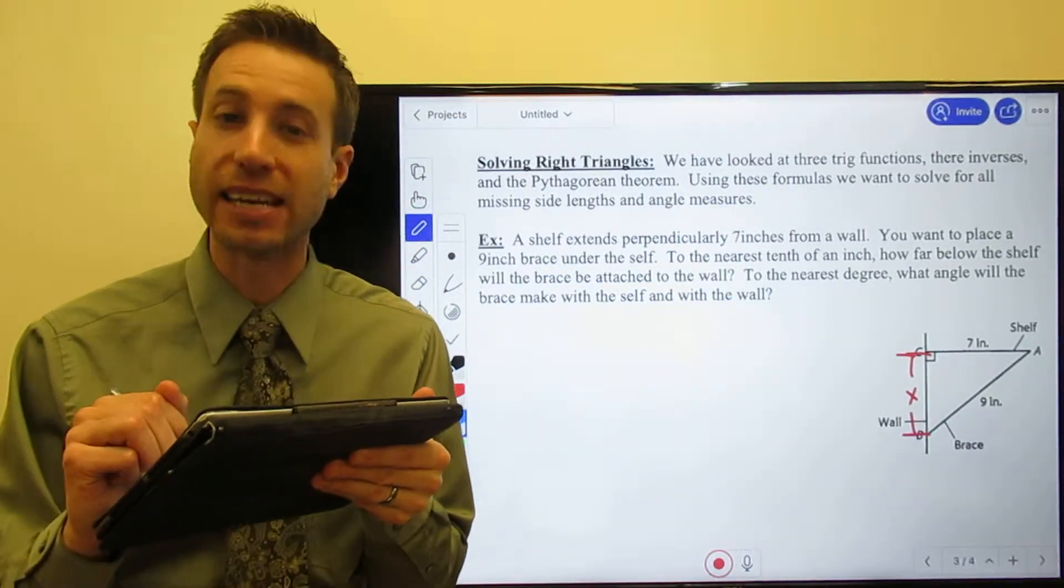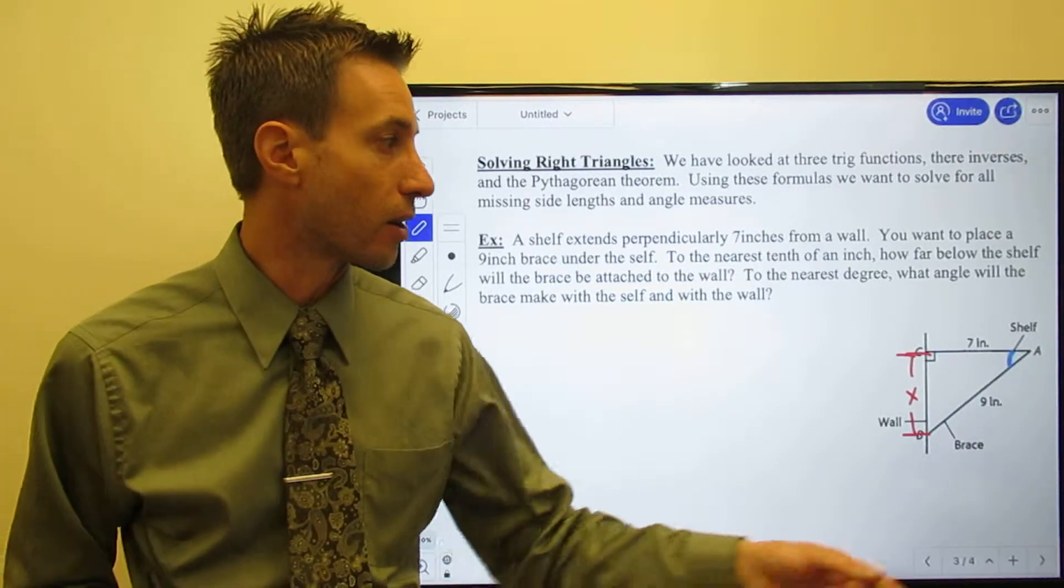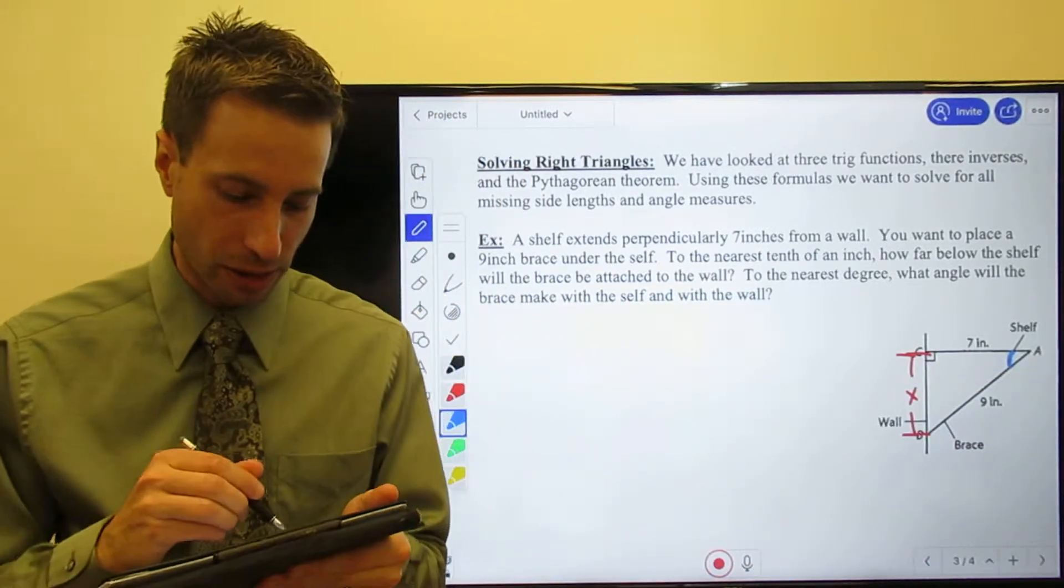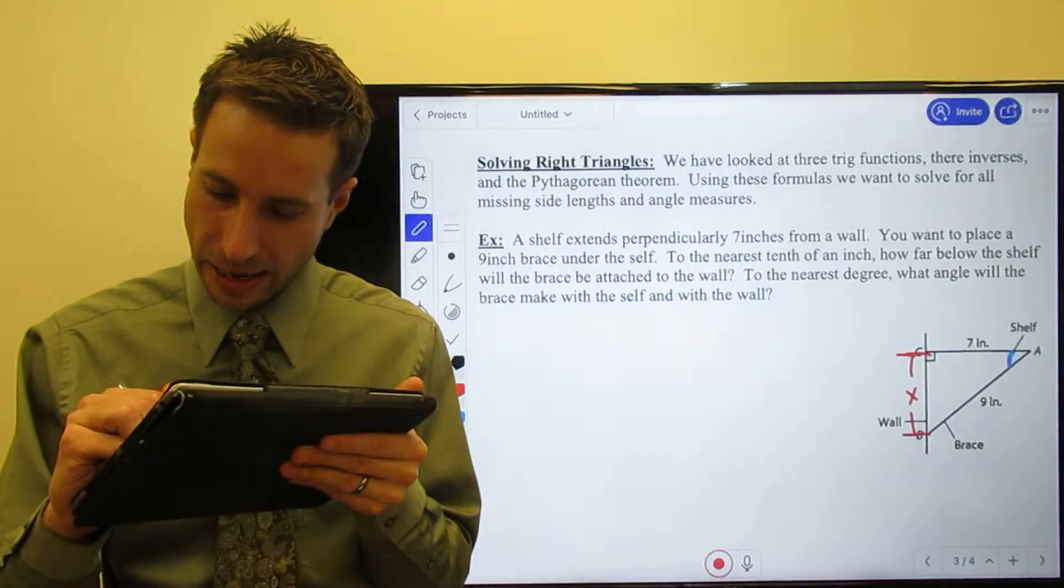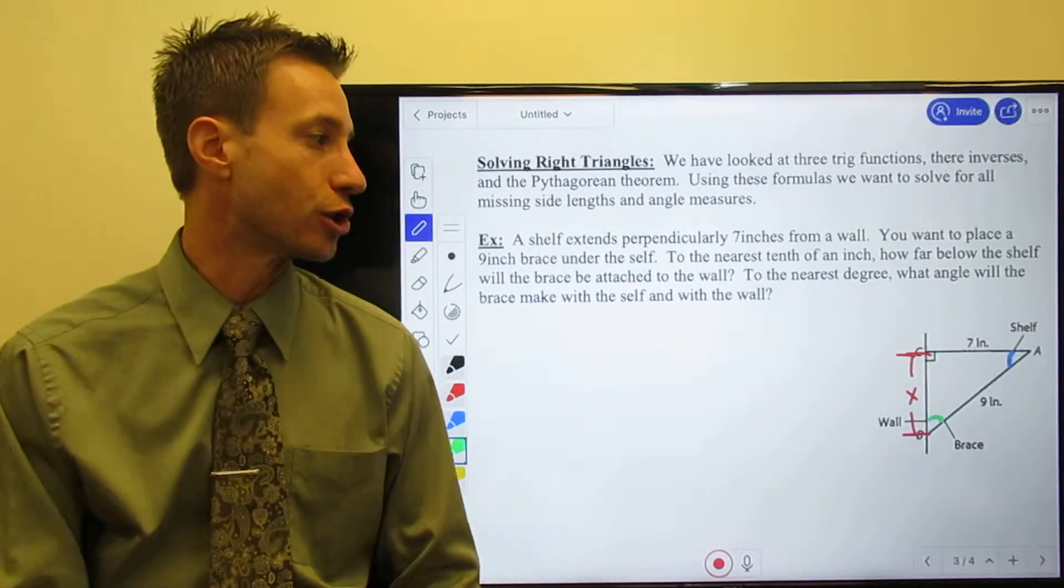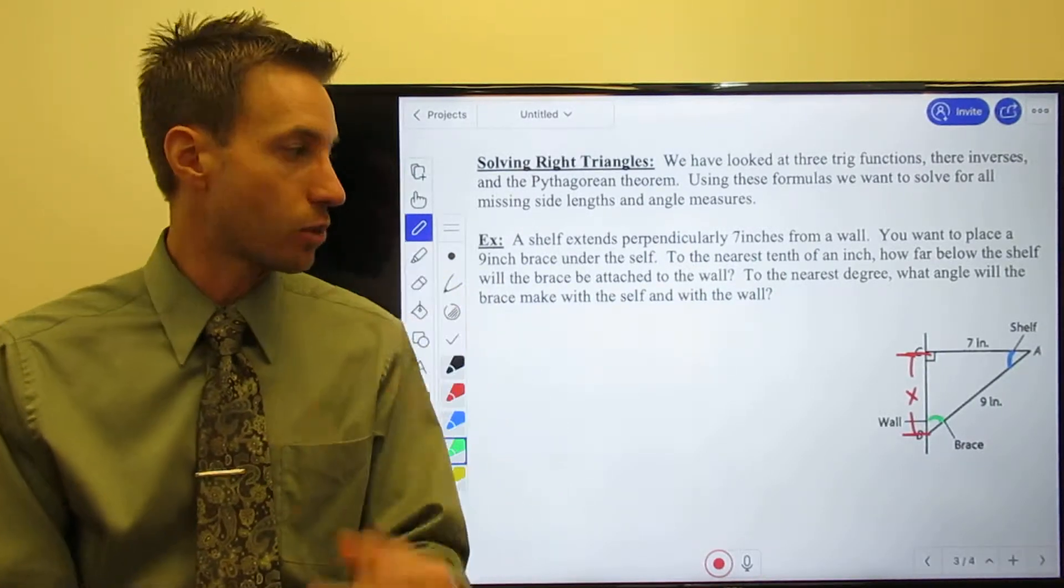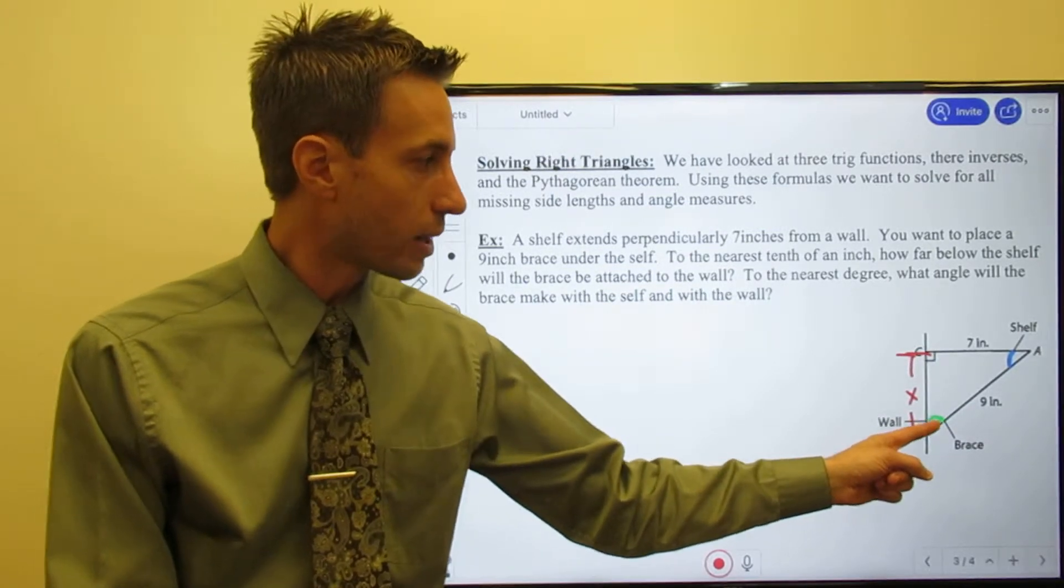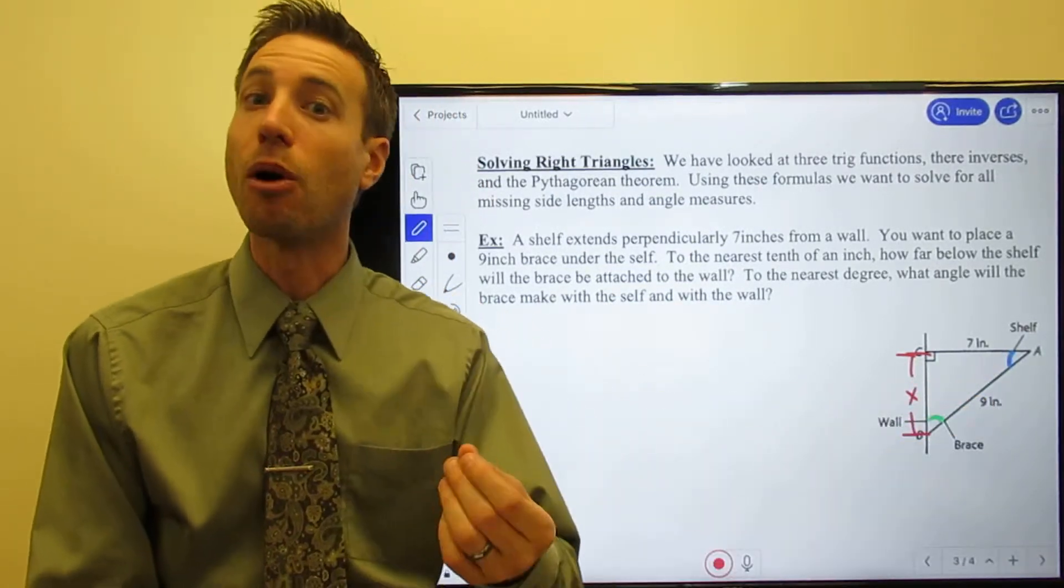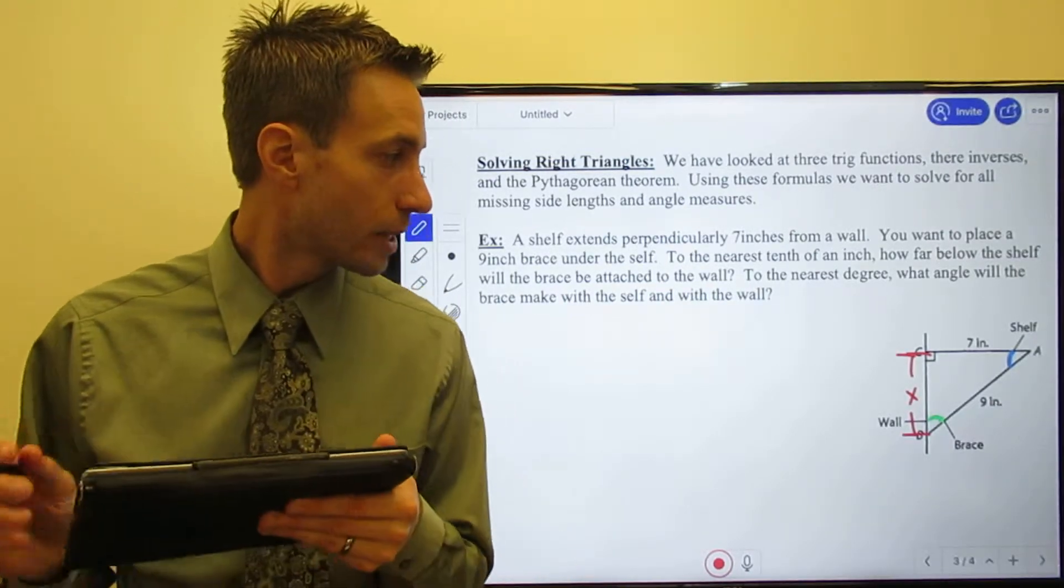Please notice I am asking you to find the angle it makes with the shelf - that's this guy right up here. I want to know what is the measure of angle A, and what is the angle it makes with the wall - that's this guy down here. I want to know what is the measure of angle B. So here we go - we need to find these three measures: how far down the wall will the brace be attached, and what is the measure of both of those acute angles.